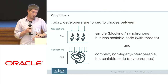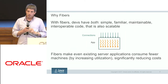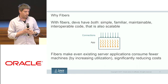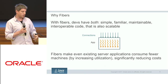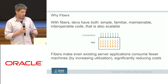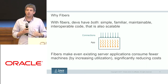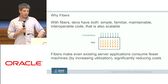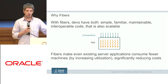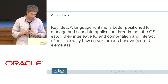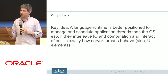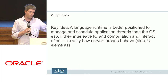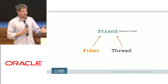Asynchronous code doesn't interoperate well with legacy code and with other synchronous code in general. With fibers, you don't have this dilemma anymore. You can write code that is simple, maintainable, and interoperable, but also scalable. Even if you have a million concurrent connections, you can assign a single fiber to each of them. Even existing code can be relatively easily retrofitted to work with fibers, enabling you to handle a much larger number of connections on a single server, requiring fewer servers. The key idea is that the language runtime can make assumptions that make it much more suitable for scheduling these lightweight threads than the OS.